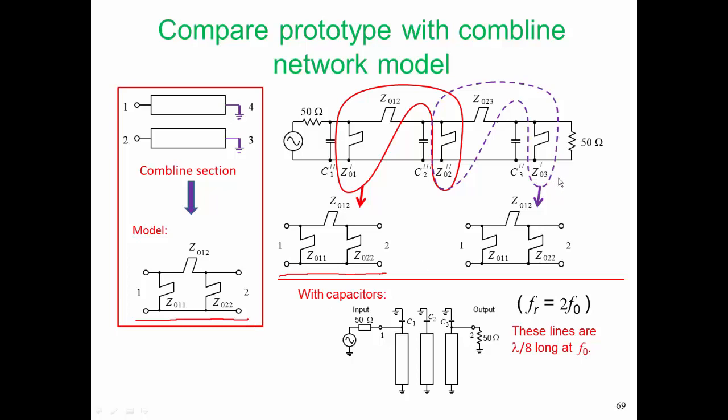We can pull out the rightmost pi arrangement of stubs, which is shown here, and that will give us another pair. But we shared a stub between the two networks, and that happens to be this shared center line here. So it is legitimate for us to share that stub between the two pi arrangements, because when we come up with our combline layout, we in fact share a line.